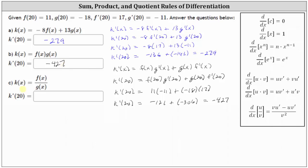And then for part c, we have k of x equals f of x divided by g of x. So because k of x is a quotient, we need to apply the quotient rule of differentiation shown here on the right. So now k prime of x is equal to — starting with the denominator, the denominator is g of x squared. The numerator is g of x times the derivative of the numerator, which is f prime of x, minus the numerator f of x times the derivative of the denominator, which is g prime of x.